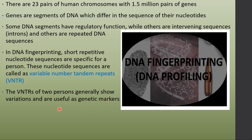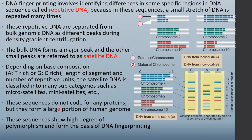VNTRs of two persons show variation, so we can use them as genetic markers. DNA fingerprinting involves identifying differences in specific regions in the DNA sequence — the repetitive DNA. Some parts of the DNA are repeated again and again in the same way, and such DNA is called repetitive DNA, where a small stretch is repeated many times.